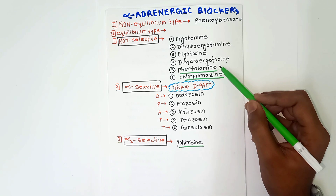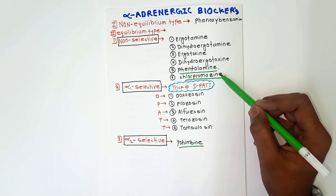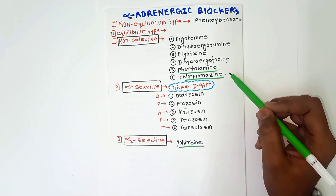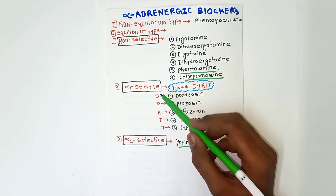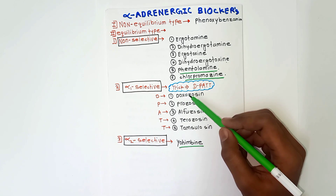From the non-selective drugs, you only need to remember phentolamine and chlorpromazine. The trick to remember the alpha-1 selective drugs is D-PAT.